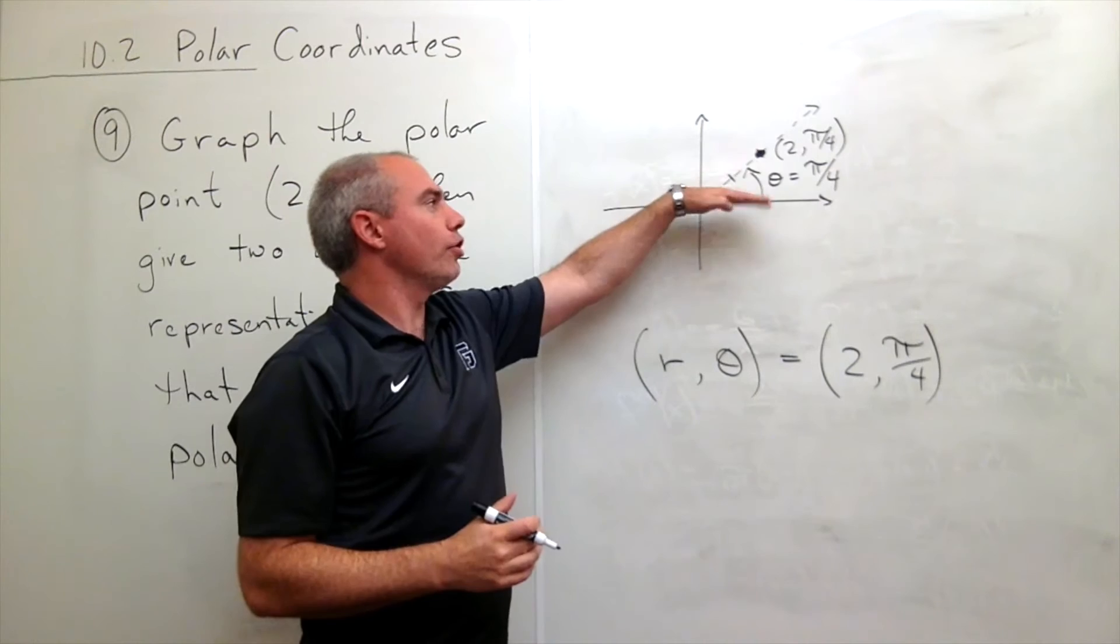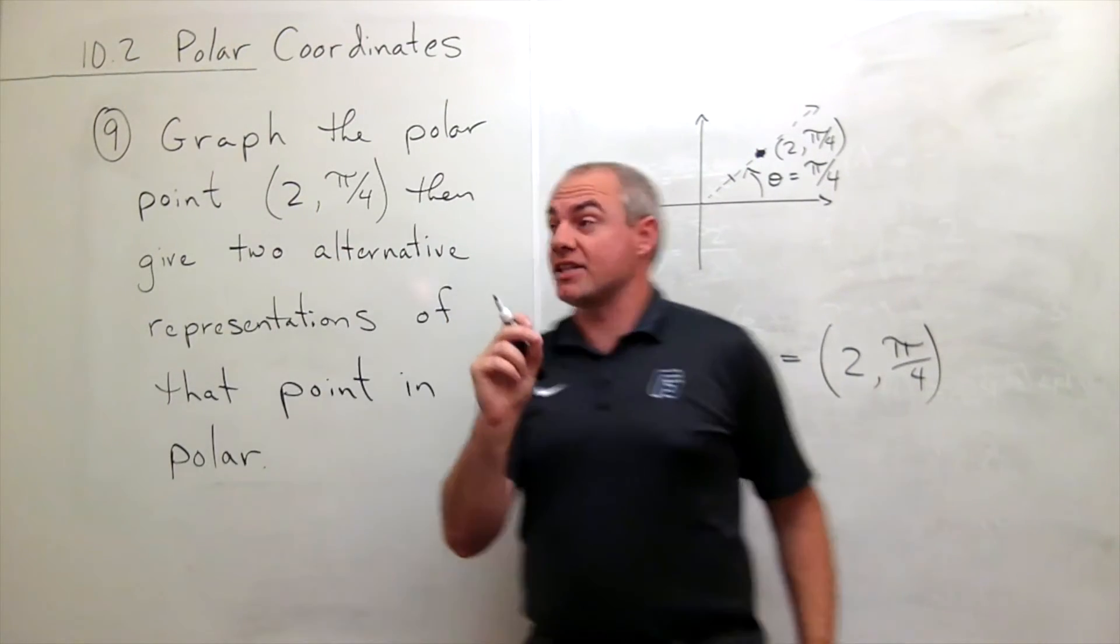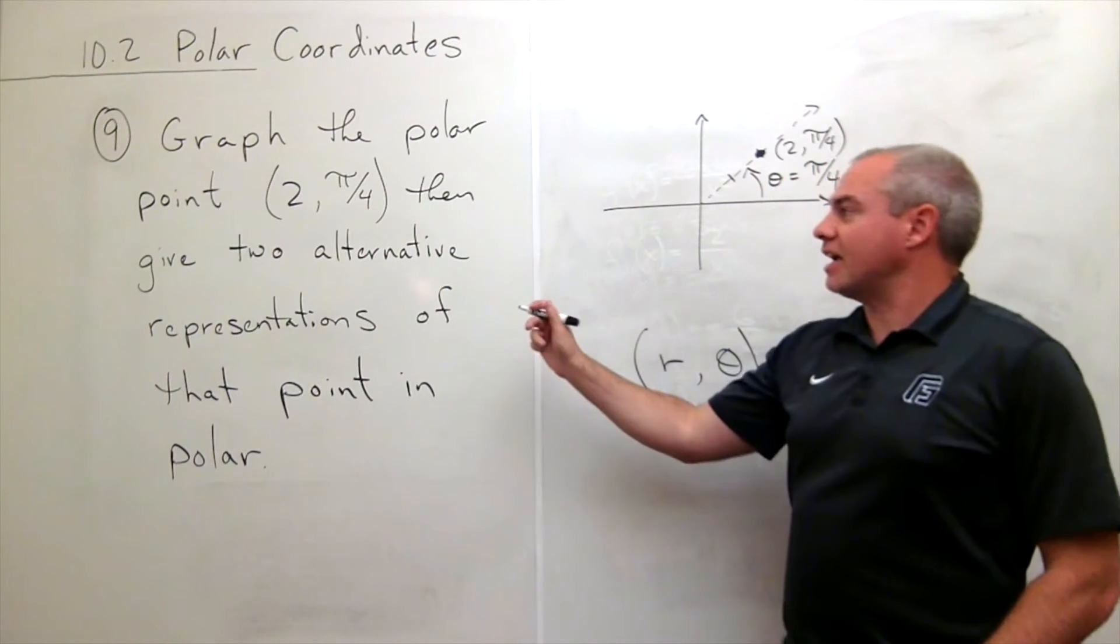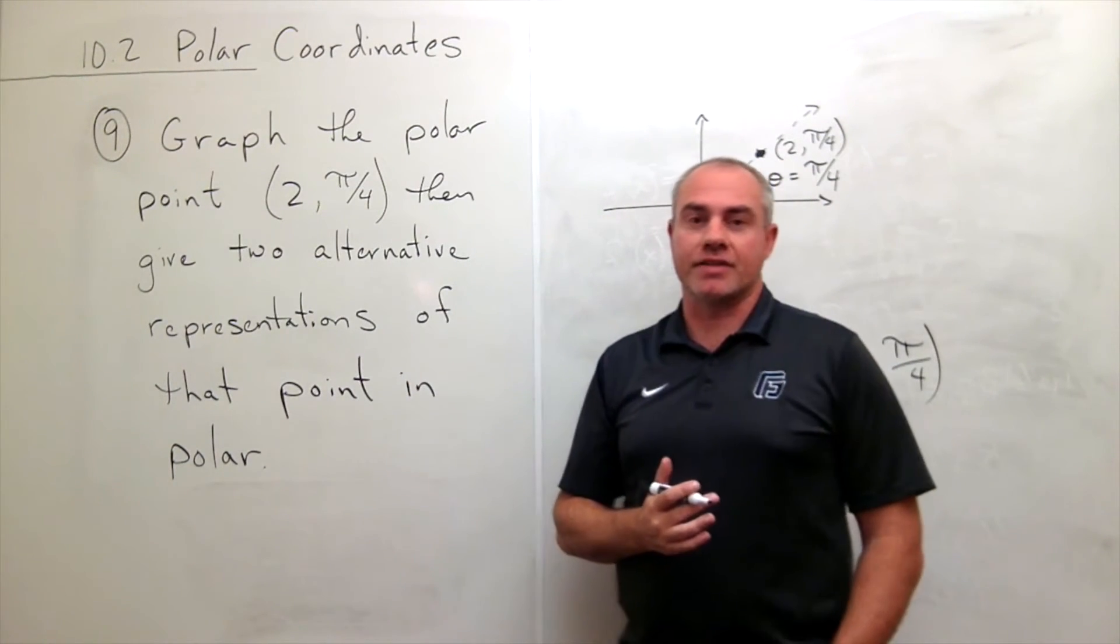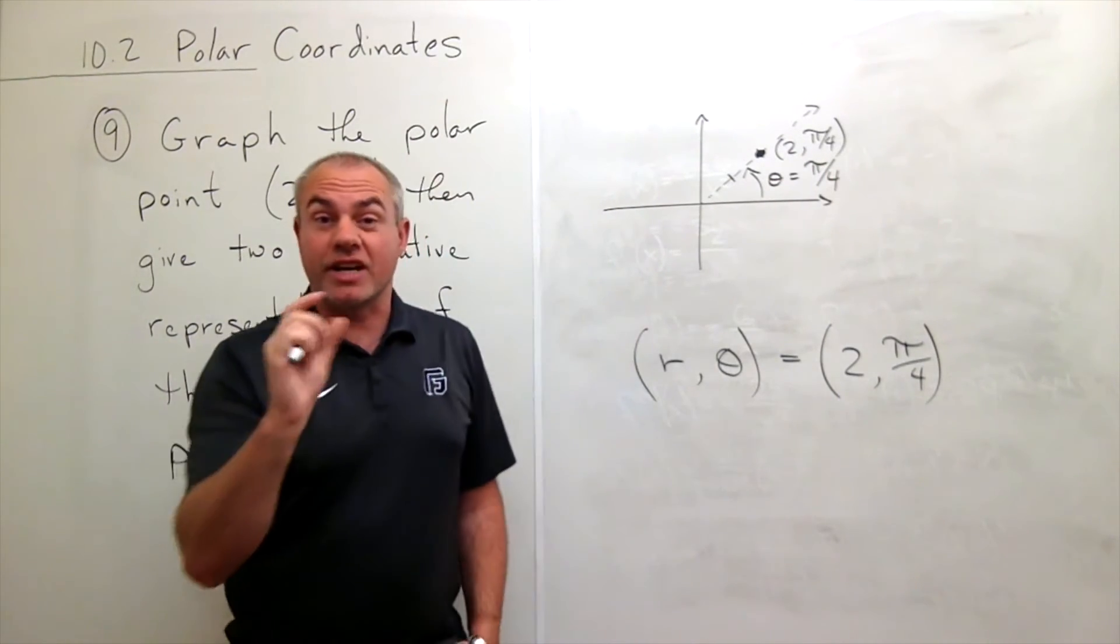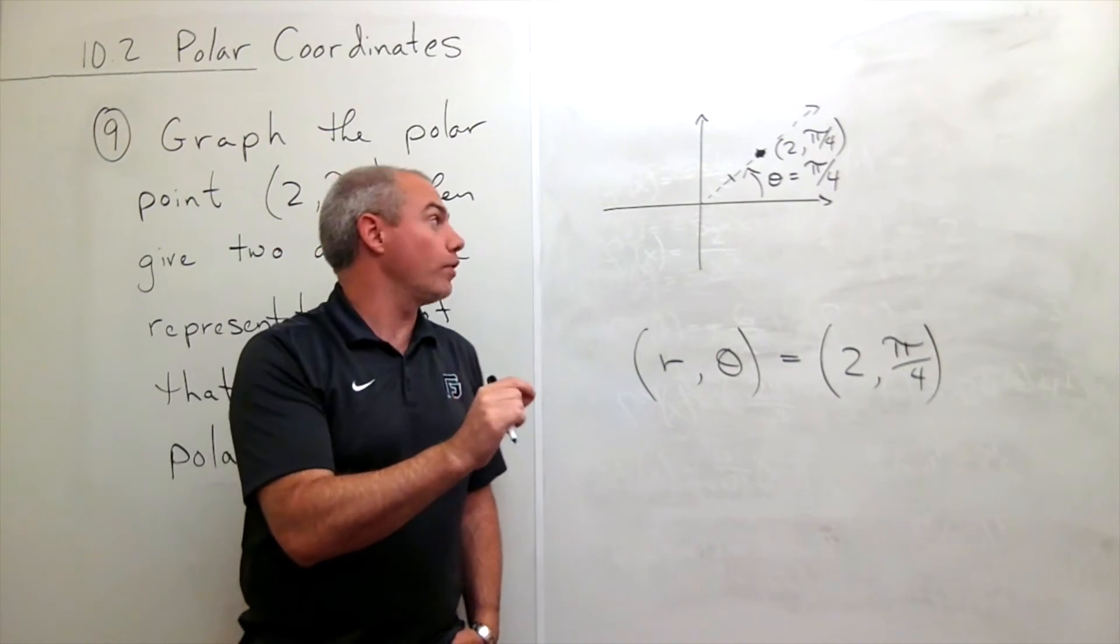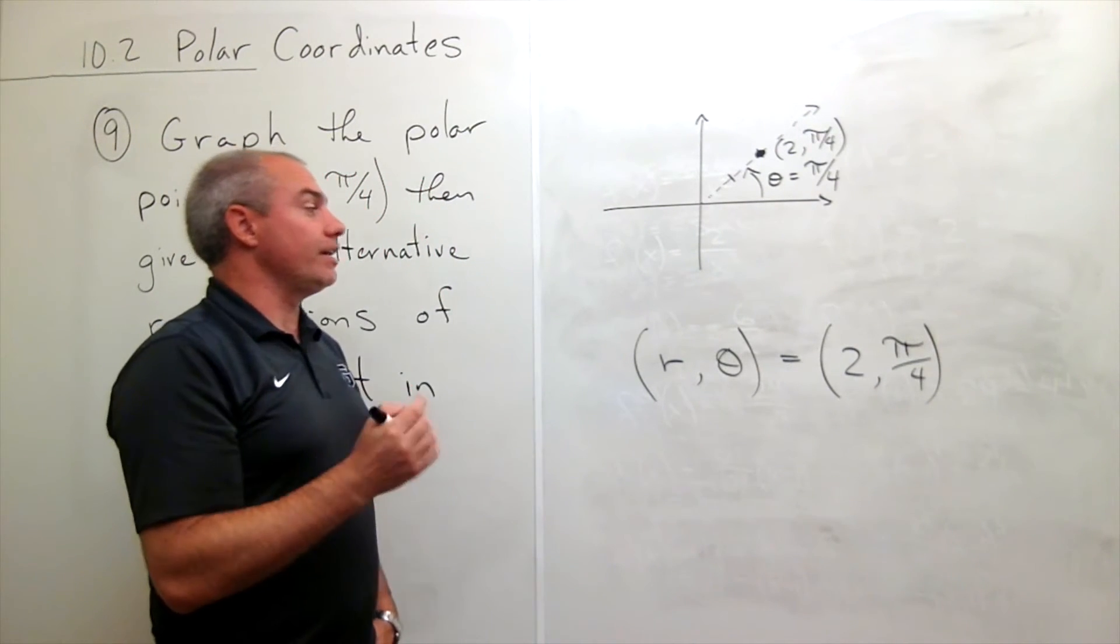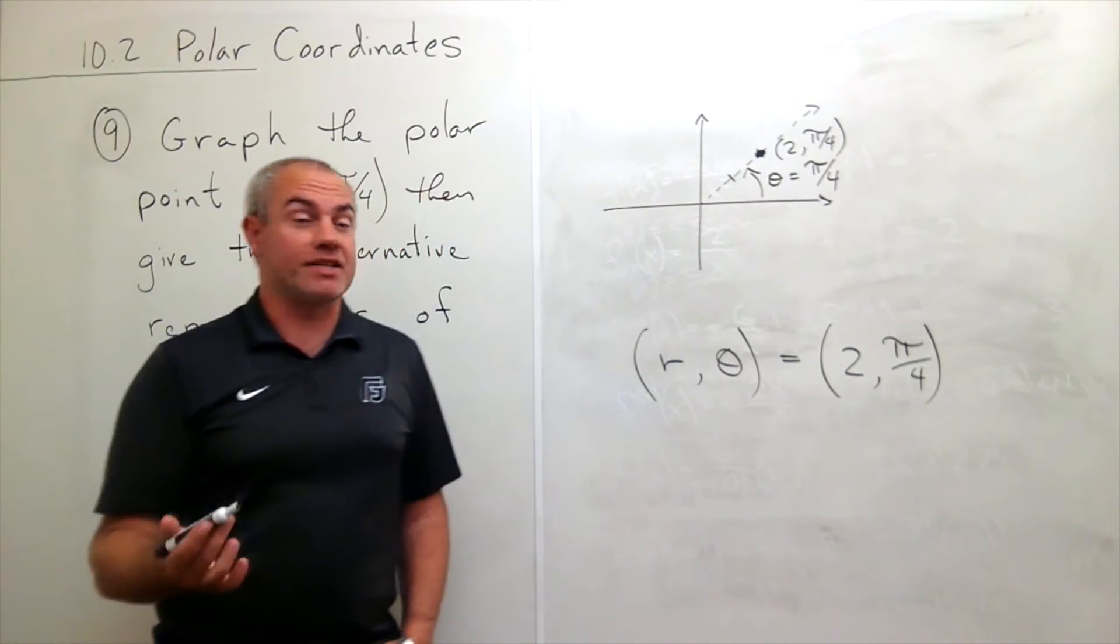So get your angle right and then move along your angle. That's the first part of this problem. The second part says, what are some other ways that I could have written this? Because in polar coordinates, there isn't just one way to write a point like there is in rectangular coordinates. We could write a point in lots of different ways. I'll just give you two as an example.